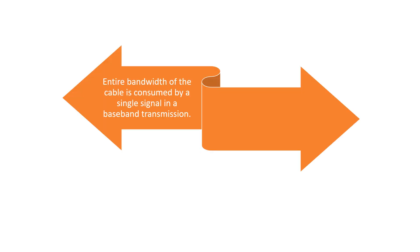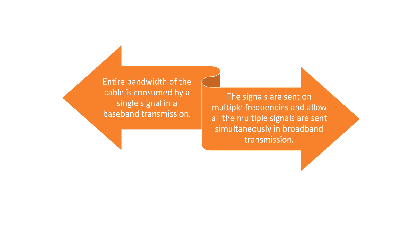The entire bandwidth of a cable is consumed by a single signal in baseband transmission. In broadband transmission, signals are sent on multiple frequencies, allowing multiple signals to be sent simultaneously.